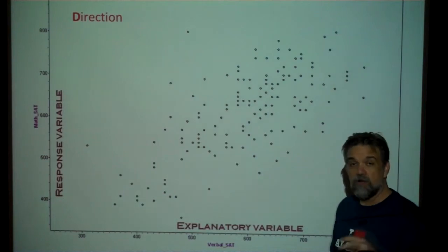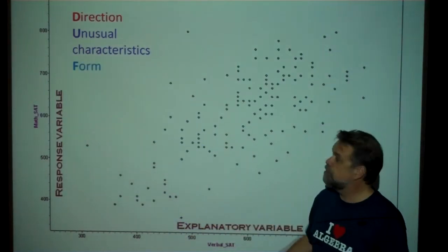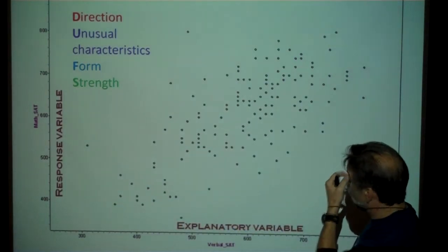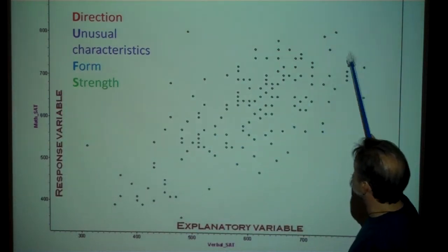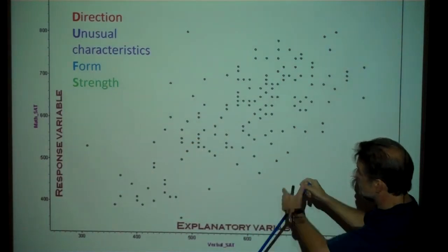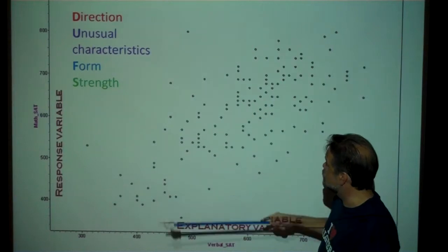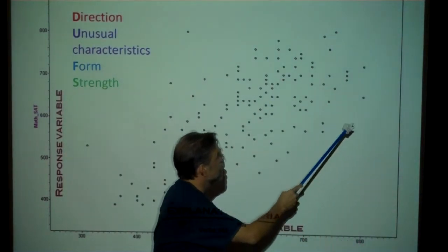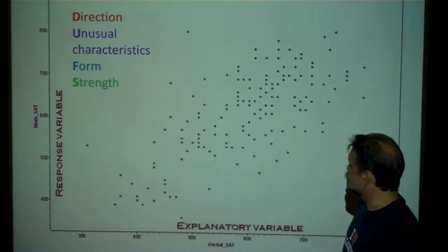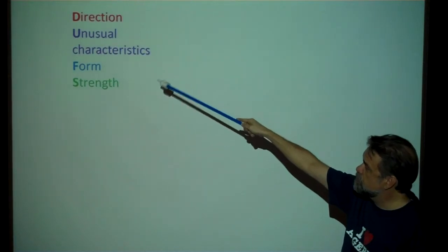When we talk about this data, we're going to talk about direction, unusual characteristics, form, and strength. If I were looking at this scatter plot, one thing I'd notice is that it's going up — generally, as people do better on the verbal part, they also do better on the math part. There's quite a bit of variance though. You have strong math students who don't do well on verbal, and strong verbal students who don't do well on math. Let's talk more specifically about direction, unusual characteristics, form, and strength.